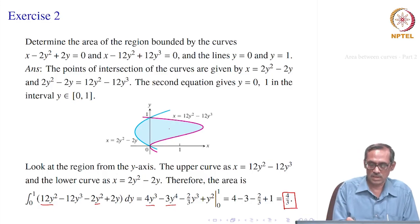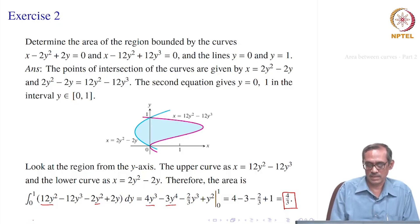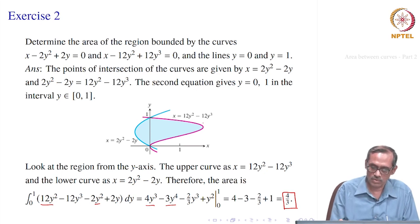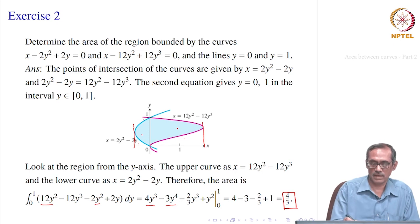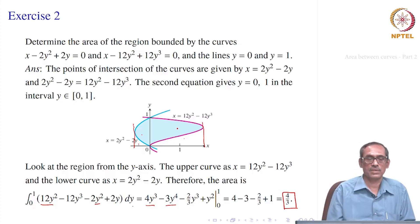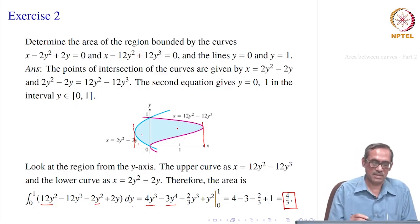Here you see that looking from the y-axis made it easier. If you do it from the x-axis, you can still do it, but you have to find certain points and subtract areas on each side to get the total area — which would be a bit more complicated. First you would have to find those key points.